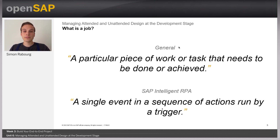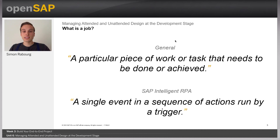Let's now think about an automation. Let's say you have designed an automation that contains several steps. Why couldn't one of those steps be executed as a job? This could really be powerful and we are going to see why in the next part of the presentation.